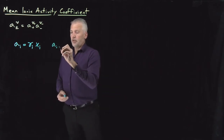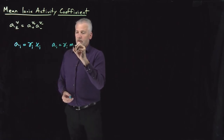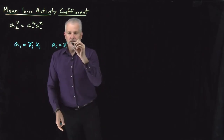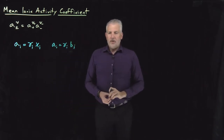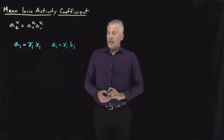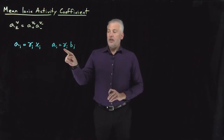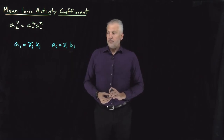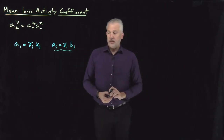Often for solutes in a solution, we don't use the pure substance as our standard state. We might use the molality — B for molality — a one molal standard state. So if we're using a one molal standard state, then the activity would be one when we're in a one molal solution. This is actually more common for electrolytic solutes.